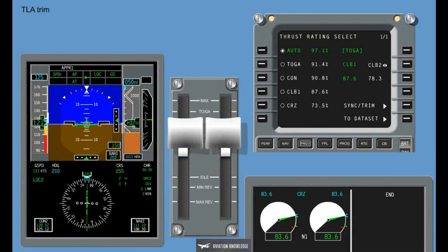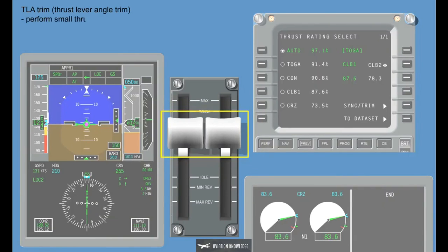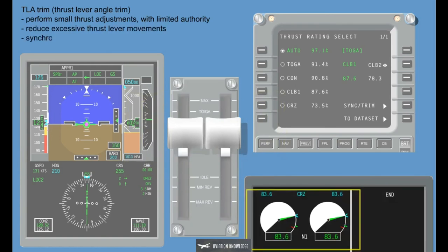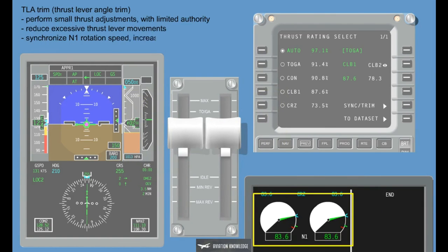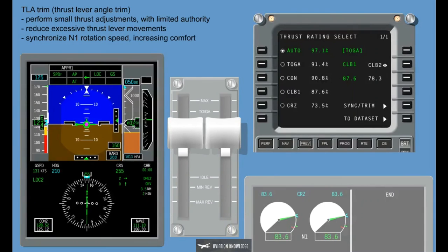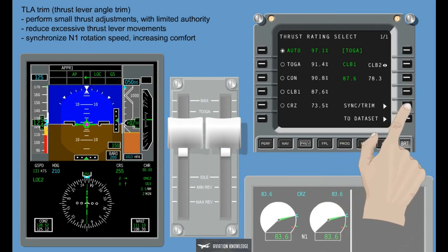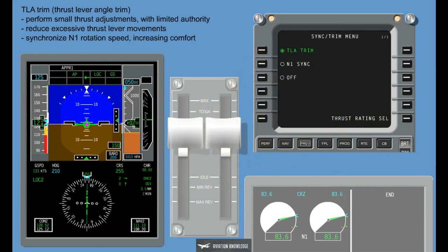TLA Trim: The thrust lever angle trim has the following functions: perform small thrust adjustments with limited authority; reduce excessive thrust lever movements; and synchronize in-one rotation speed, increasing comfort. The thrust lever angle trim is set to on whenever the autothrottle is engaged, but the TLA trim also works when the autothrottle is disconnected when thrust lever angle trim on the MCDU TRS page is set to on manually.